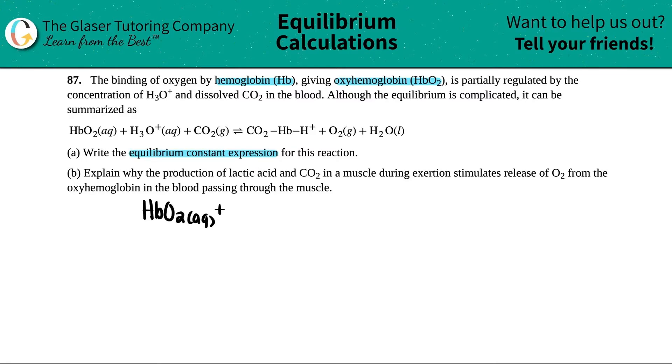When it comes in contact with acid, so H3O+, that's aqueous, and carbon dioxide, which is a gas, what happens is a complicated reaction, but they're summing it up by saying that you have carbon dioxide being bound to the hemoglobin. That's what this dash means, and also the acid is bound to the hemoglobin. Then they're saying that oxygen is going to be released, and H2O will be produced as water.